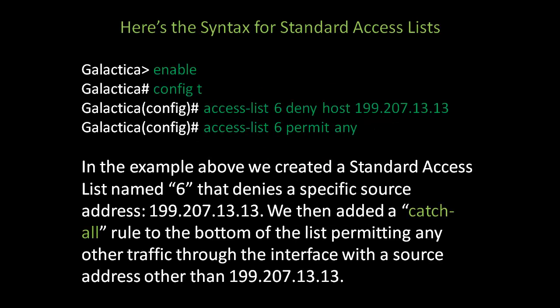Here's the syntax for standard access lists. When in user mode, use enable to go to privilege mode, then config t to go to global configuration mode. Create an access list with the keyword access-list. Specify a number between 1 and 99 for a standard access list, then select to either deny or permit traffic. You can specify a range of hosts or a single host with the keyword host, and then the IP address. Remember, it's the source IP, not the destination IP. Standard access lists only do source IPs, not destination IPs. In this case, we're going to deny any packet coming from the host 199.207.13.13.